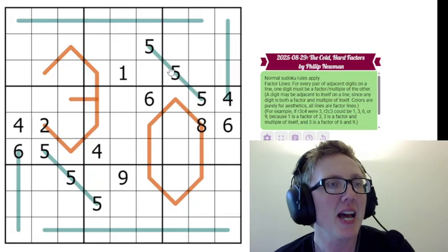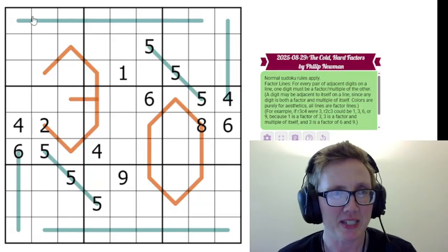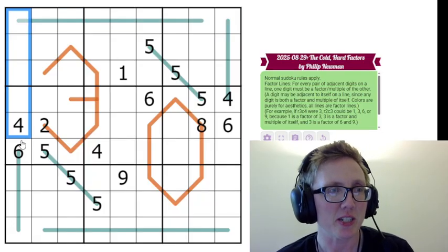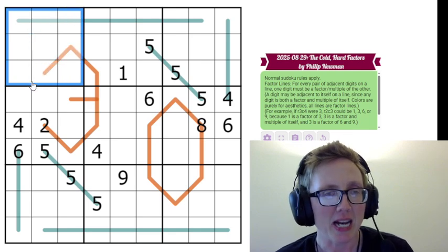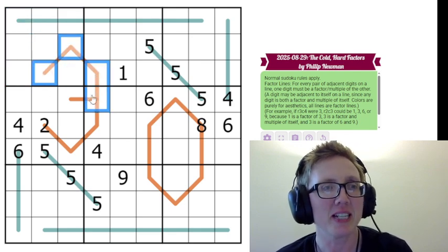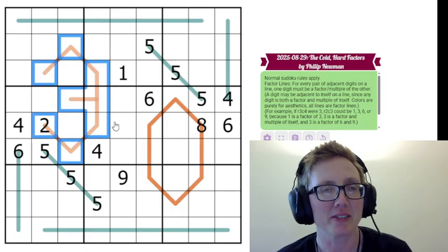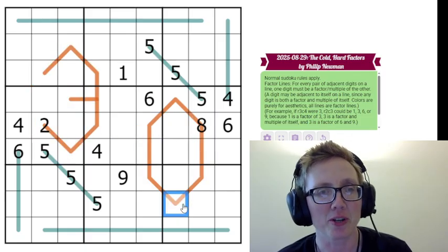So what's going on here? We have normal Sudoku rules, meaning we're placing the digits 1 through 9 once each in each row, each column, and each outlined 3x3 region. In addition to that, we have factor lines, so all of the lines in the grid, regardless of color, are factor lines. The colors are simply for aesthetics.